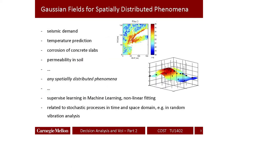By spatially distributed system, we mean any physical quantity that changes in space. You have a spatial domain — maybe a region — and a quantity that varies at different points within that region. One application we have studied is seismic demand: parameters like peak ground acceleration (PGA) that differ across locations even during the same earthquake. Other examples include temperature, corrosion damage across large systems, and soil permeability — all modeled using these approaches.